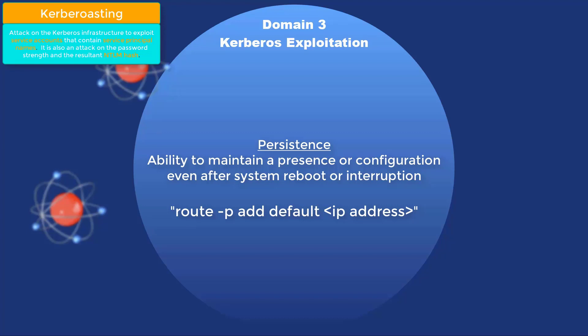Persistence means that if your device ever happens to reboot, the route is still there. Because if your computer rebooted and the route was not persistent, the route would disappear and people would not be able to connect — and there would be chaos. That's pretty much what I'm trying to say, and that was also off script.